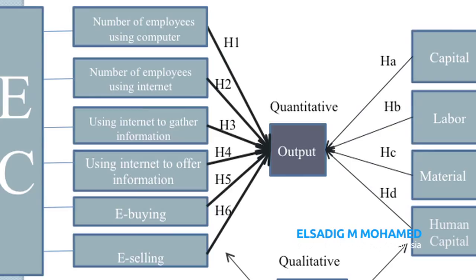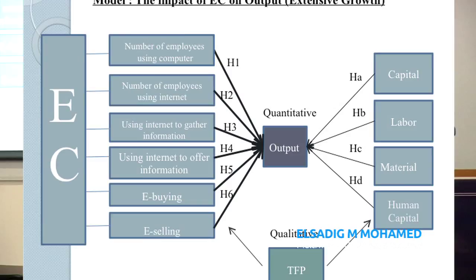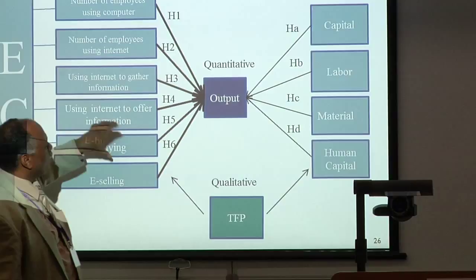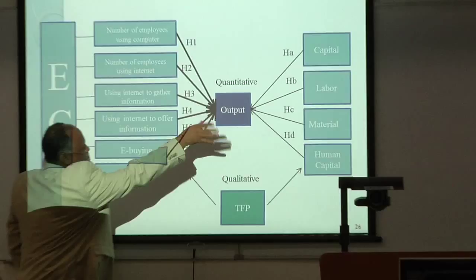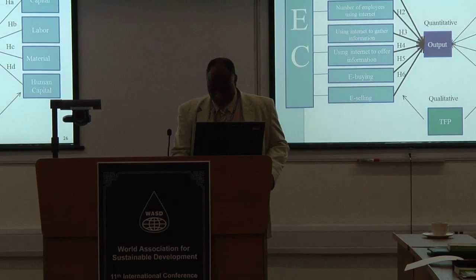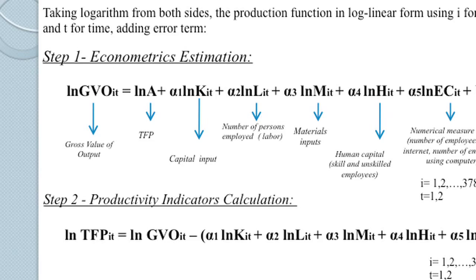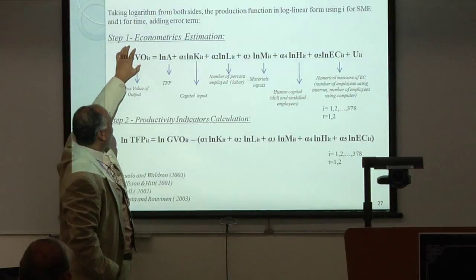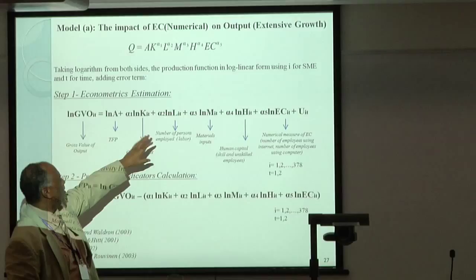This is the theoretical model. Using a mathematical model: we have output as a function of physical capital, human capital, material, labor force, skilled labor, and ICT/e-commerce. These are all inputs in the model. If you look at inputs to produce output, this is input-driven. If you look at the quality of all these inputs, this is total factor productivity — the Solow residual or technological progress. The gross value of output is a function of the Solow residual, based on quantities of labor, capital, material, human capital, and e-commerce.